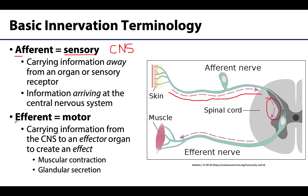Efferent neurons will carry information from the central nervous system to an effector such as a muscle or a gland, and something will happen like a muscle contraction or glandular secretion. For our purposes, efferent will be synonymous with motor when we're talking about innervation, and you will definitely hear them used interchangeably. So you may hear me say efferent or motor — be aware that those two terms are synonymous when talking innervation.